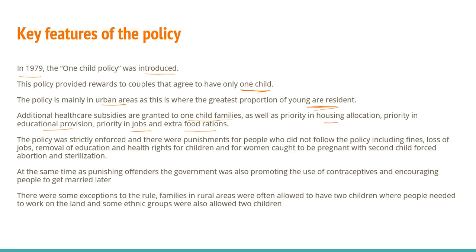These are the incentives given to people who decide to follow the policy. The policy was strictly enforced with punishments for those who do not follow it, including fines, loss of job, and removal of education and human rights for children. Women caught pregnant with a second child would be forced to have an abortion, and possibly sterilization. At the same time as punishing offenders, the government was also promoting the use of contraceptives and encouraging people to get married later to help drop the fertility rate.